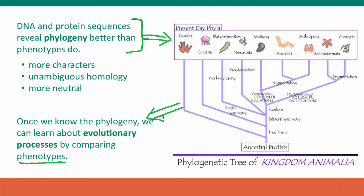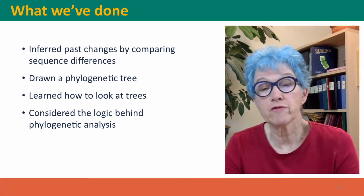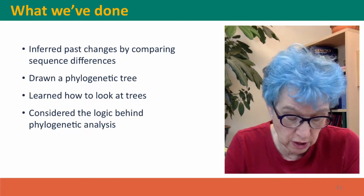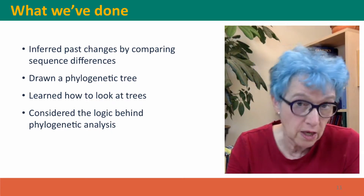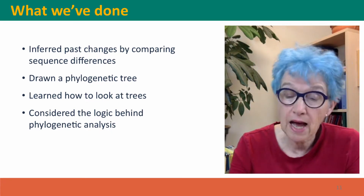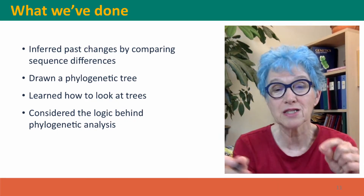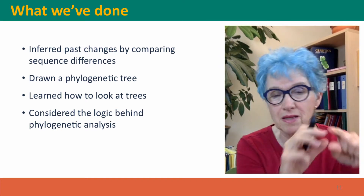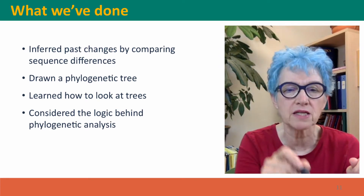We can then use the phylogenetic relationships to learn about evolutionary processes by comparing phenotypes. So we use sequence differences to infer the relationship, and then we use the relationship to understand how phenotypes evolve. What we've done is infer past sequence changes by comparing sequence differences and drawn a phylogenetic tree. What matters is the ancestry — it's not which organism is sitting beside which in the strip at the top of the tree, but following the ancestry back.